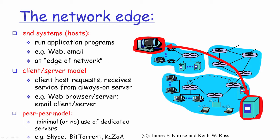In the client-server model, a client end system initiates the request to a server running on the network. The server is always expected to be on, available, and waiting to accept connection requests from any client on the network. When a request comes in, it accepts the connection, performs the service the client requires, and sends a response packet back to the client.